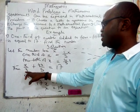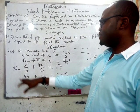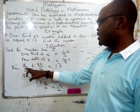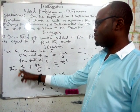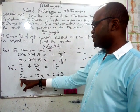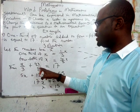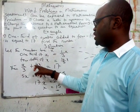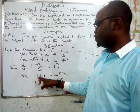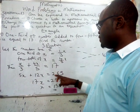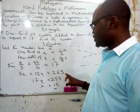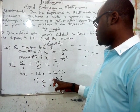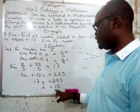We now solve. The LCM of 3 and 5 is 15, so we multiply through by 15. 15 times x/3 gives 5x, because 3 cancels into 15 to give 5. 15 times 4x/5 gives 12x, because 5 cancels into 15 to give 3, and 3 times 4 is 12. 15 times 17 gives 255. So we have: 5x + 12x = 255, which gives 17x = 255.